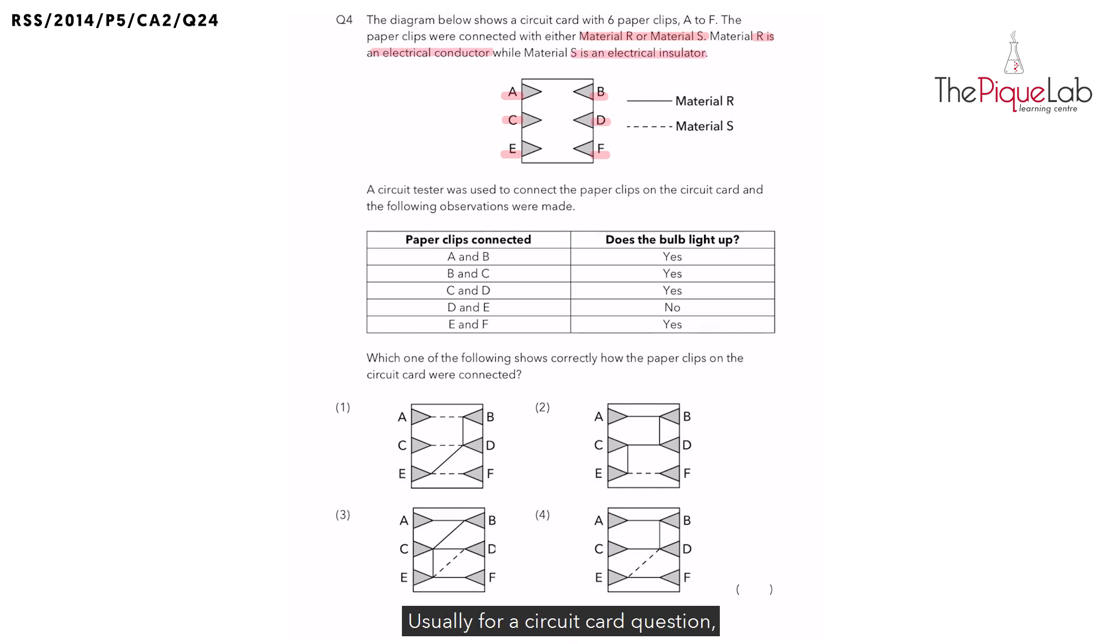Usually for a circuit card question, we will look at the situation where the bulb lights up. So we know those two points tested, for this case points A and B, are definitely connected by wires, forming a closed circuit allowing the bulb to light up.